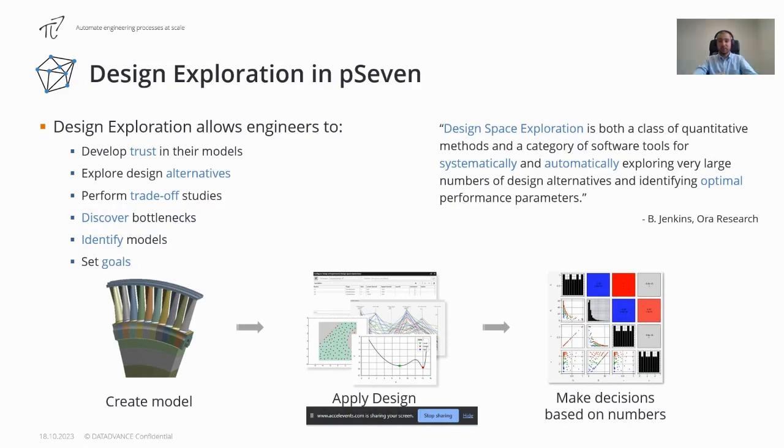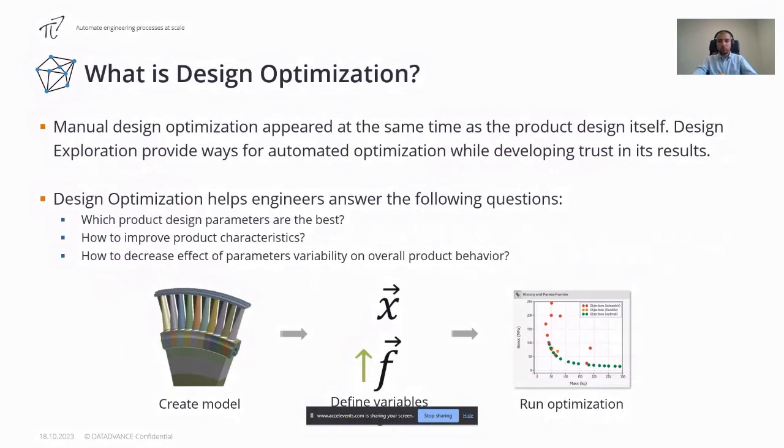What is design optimization? This is a mathematical approach to find the best possible solution from a set of available options, considering specific objectives and constraints requirements. It involves defining an objective function which could be to maximize profits, minimize costs, optimize performance, or achieve other defined goals. Constraints such as physical limitations, budget constraints, or resource availability are also considered. With design optimization it is possible to answer questions such as how to improve product characteristics or which combinations of input parameters will be the best.